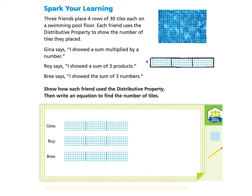We will start under Spark Your Learning. Three friends place 4 rows of 30 tiles each on a swimming pool floor. Each friend uses the distributive property to show the number of tiles they placed. Gina says, 'I showed a sum multiplied by a number.' Roy says, 'I showed a sum of 3 products.' Brie says, 'I showed the sum of 3 numbers.' Show how each friend used the distributive property, then write an equation to find the number of tiles.